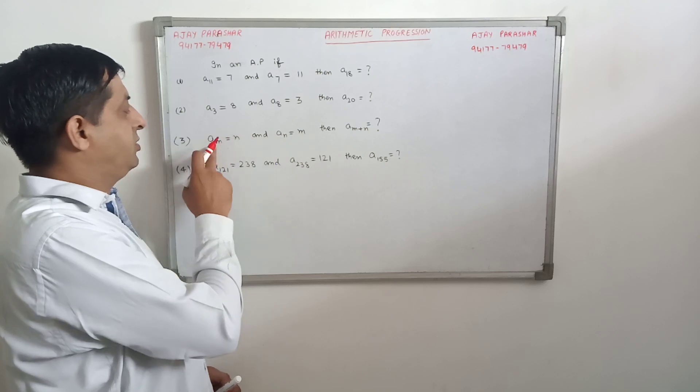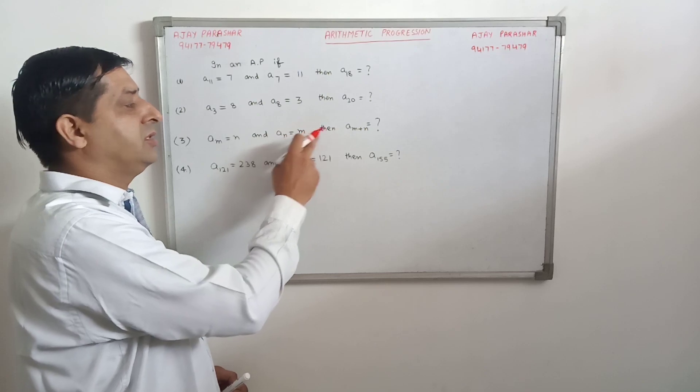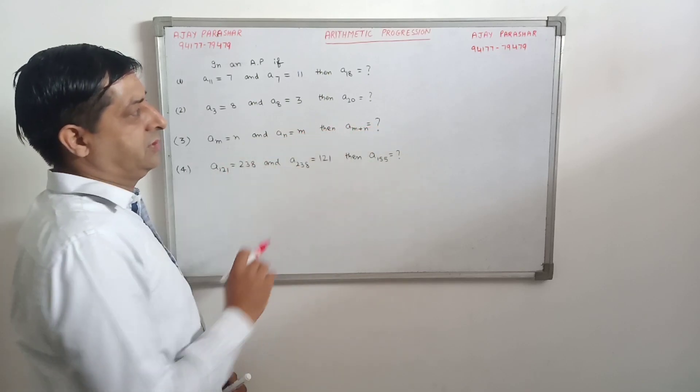In the same way, in the third question, if Mth term of an AP is N and Nth term of an AP is M, then what is M plus Nth term? In the same way, the last question.